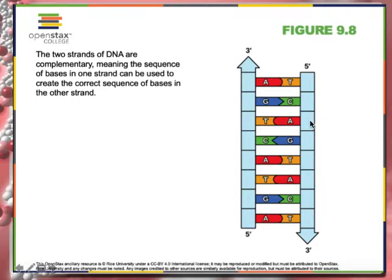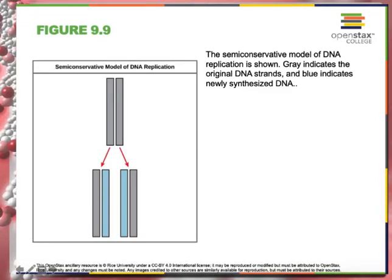DNA is replicated using what's called the semi-conservative model. In this picture you see two gray parts of DNA. When you split them apart, one gray side goes here and one goes there, and then they're copied. Each set has one original strand and one new strand — that's why it's called semi-conservative. Watson and Crick discovered this model. So one parent strand is divided into two, and each is paired with one of the new daughter strands.